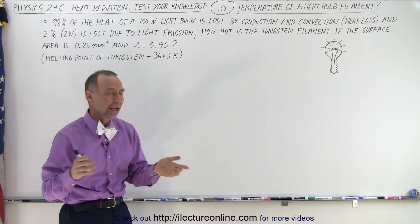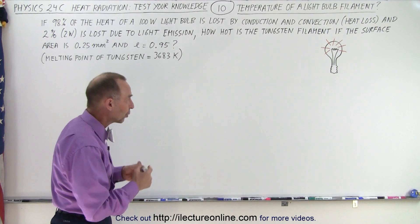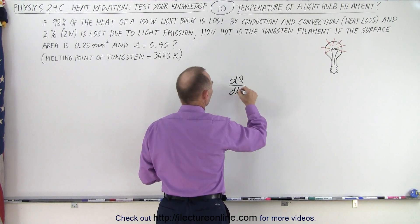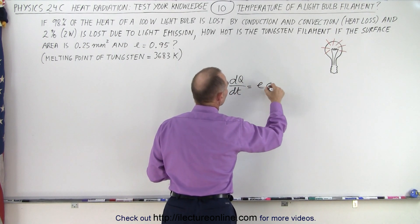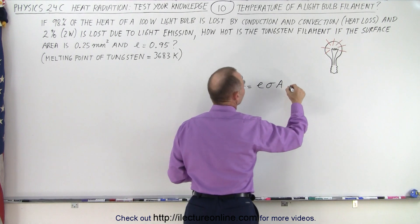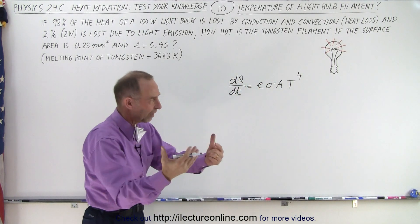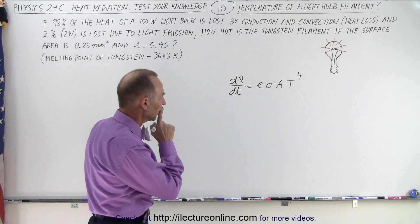All right, let's figure out how to do that. We're going to use the same equation as we had before. We're going to say that dQ/dt is equal to ε·σ·A·T⁴. And we're going to assume that it's so hot we don't have to worry about any of the heat coming back into the filament.